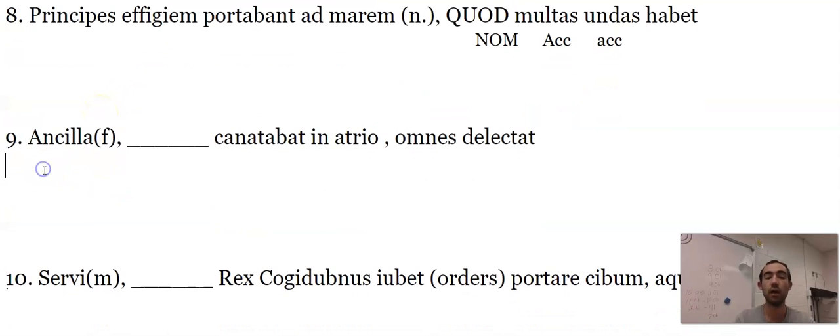Ancilla is feminine. Ancilla cantabat in atrio. Atrio is ablative. Our verb is cantabat. So I'm missing a subject. This has to be nominative. So this is quae.